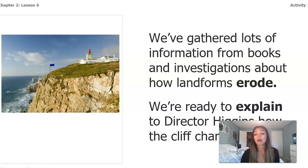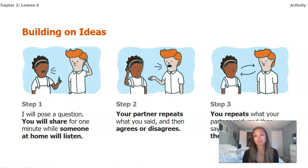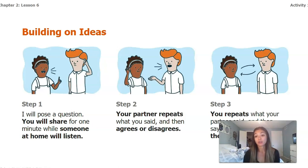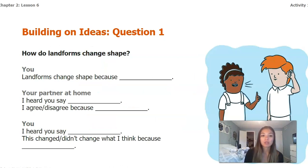Today you're going to be doing an activity with a partner at home to get you started thinking about what we're going to write in our explanation. There are three steps: Step one — I ask a question and you share for one minute while someone at home listens. Step two — your partner repeats what you said and agrees or disagrees. Step three — you repeat what your partner said and say if it changed your mind. Our first question is: how do landforms change shape?